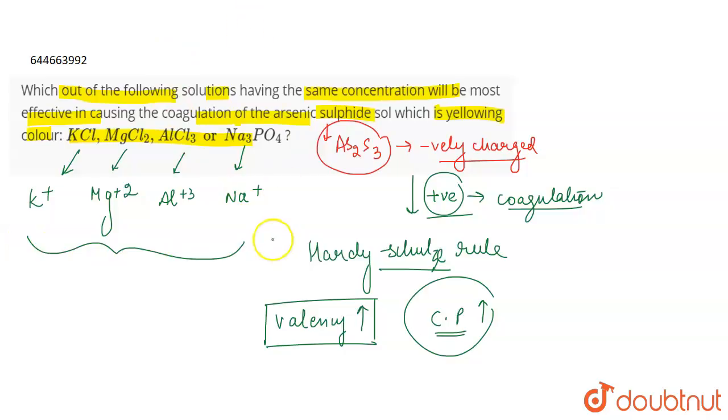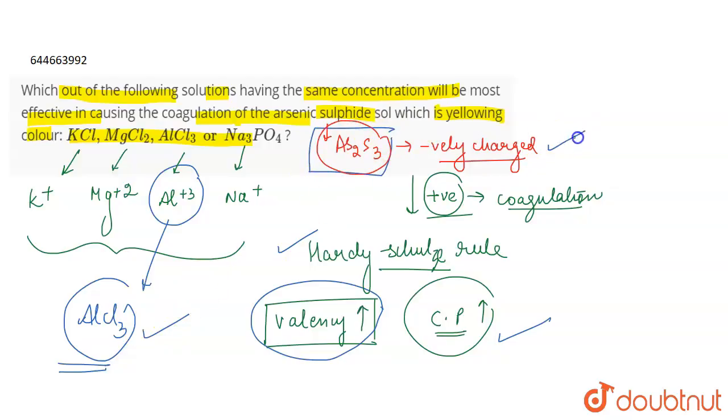Now as we said, according to the Hardy-Schulze rule, greater is the valency of the positively charged ion, in this case, greater will be its coagulating power. So out of all of these, aluminium has the highest positive charge and therefore aluminium chloride, which is AlCl3, will be most effective in causing the coagulation of As2S3, which is a negatively charged sol. So this will be the correct answer for the question.